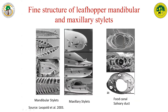They have a second type of mouthparts — two pairs of stylet-like, needle-like things. These are modified mandibles and maxillae. The mandibular stylets are on the outside, whereas the maxillary stylets are on the inside. And the maxillary stylets are doubly grooved.